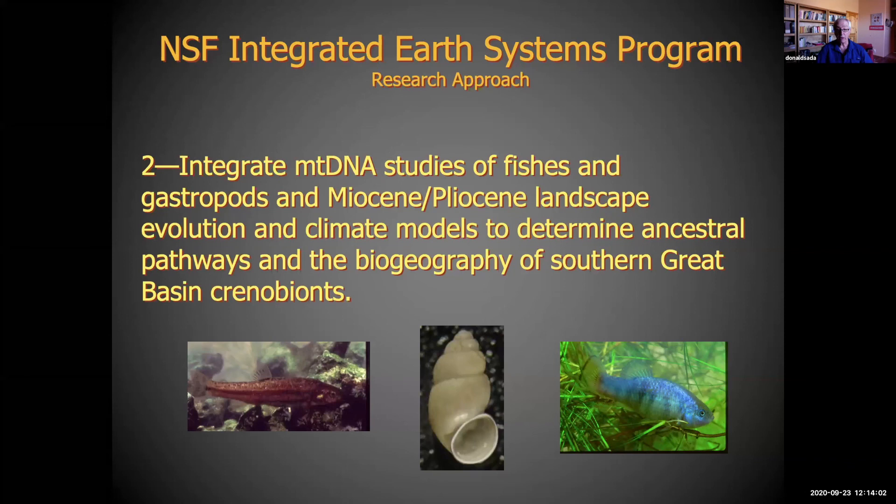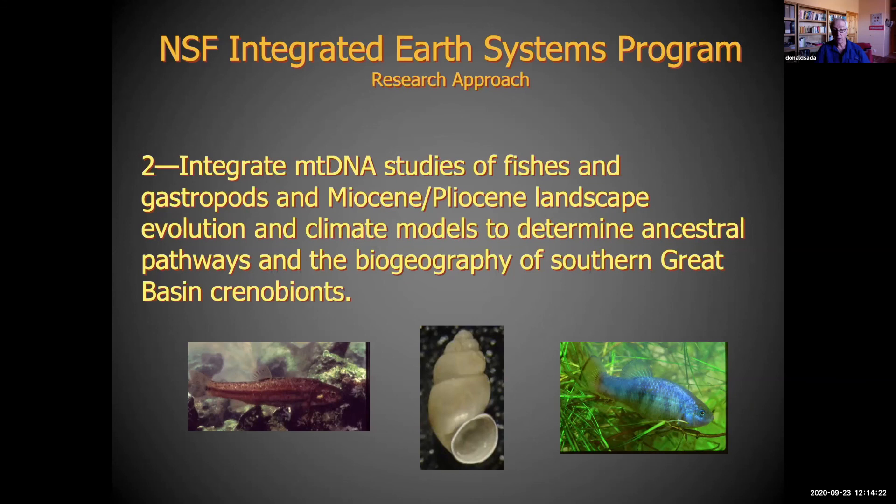There are some species here: a pupfish — a Salt Creek pupfish. This is Pyrgulopsis, a genus of spring snail found north of the Death Valley area. And Speckledace, Rhinichthys, more of a widespread species in western North America, but there is an endemic form in Nation Meadows.